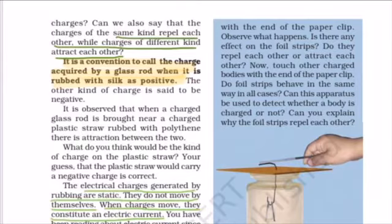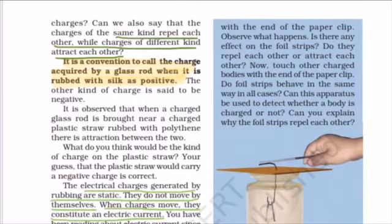It is observed that when a charged glass rod is brought near a charged plastic straw rubbed with polythene, there is attraction between the two. This means the plastic straw carries the opposite charge to the glass rod. Since the glass rod is positively charged, the plastic straw carries a negative charge.